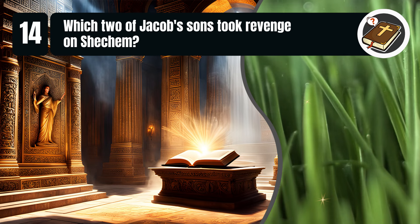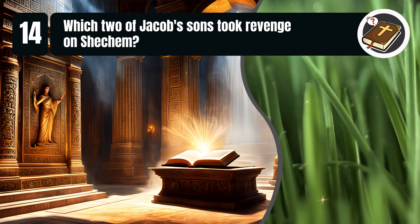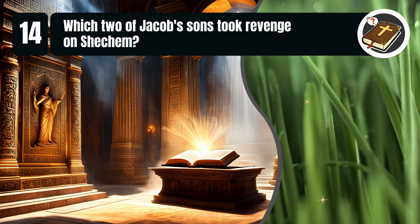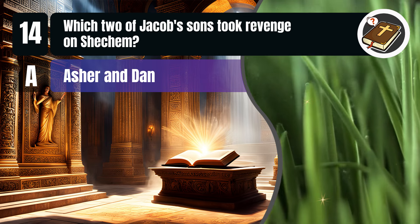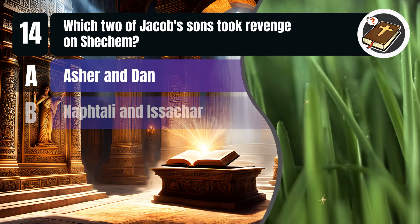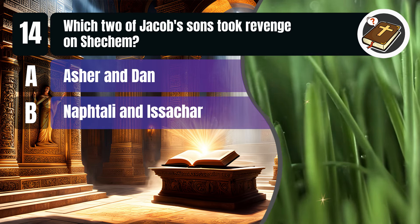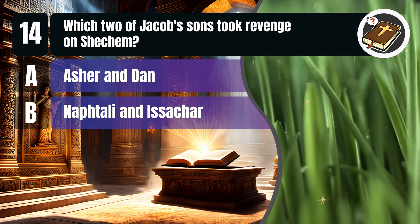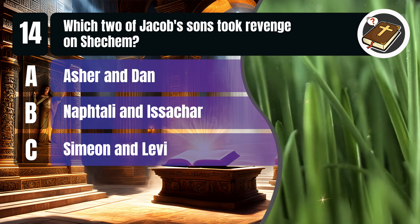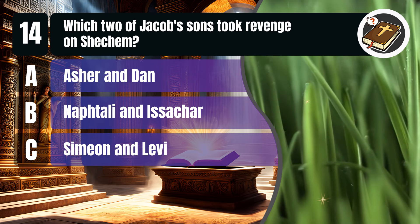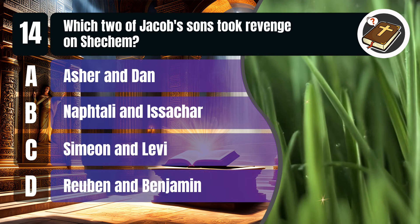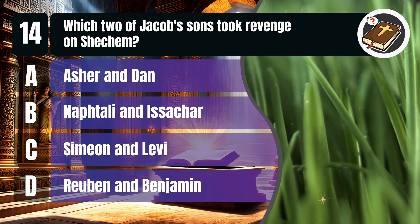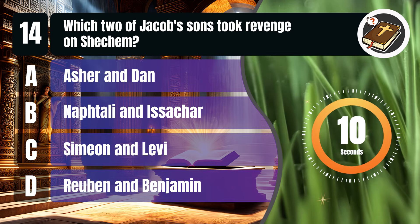Question 14. Which two of Jacob's sons took revenge on Shechem? A. Asher and Dan. B. Naphtali and Issachar. C. Simeon and Levi. D. Reuben and Benjamin. You get 10 seconds.